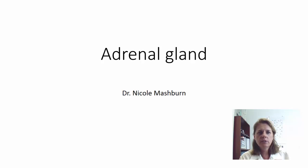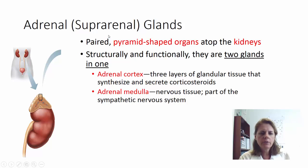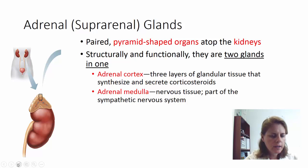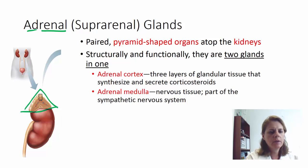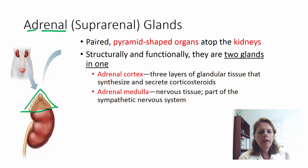The adrenals are also called your suprarenal glands because they're above the kidneys. If you look at the kidneys you will see these triangular shaped organs above them. Renal means kidney and ad means above, so supra means above renal — the glands above the kidneys. You have two of them, a left and right, and they're pyramid shaped organs that sit right on top of the kidney.